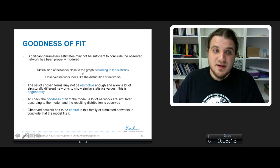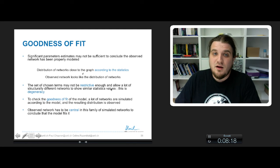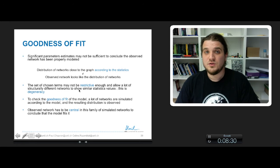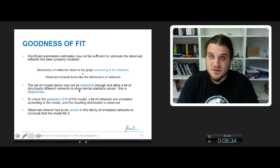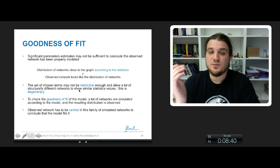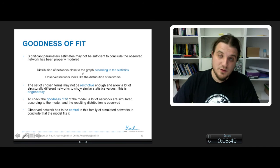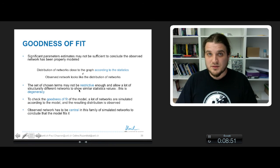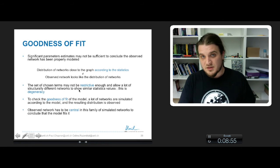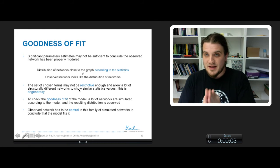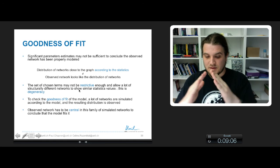In fact, the statistics you have chosen may not be restrictive enough and will allow a lot of structurally different networks to show similar statistics values. When you have this kind of phenomenon, it's called degeneracy. To see if we have a good model, we have to check the goodness of fit of the model. To do that, we will simulate a lot of networks according to the model we have. We take our model and put the parameter values into a random network generator, and we make a lot of networks. We observe if the distribution of networks that have been simulated with these parameters is centered around the observed network.